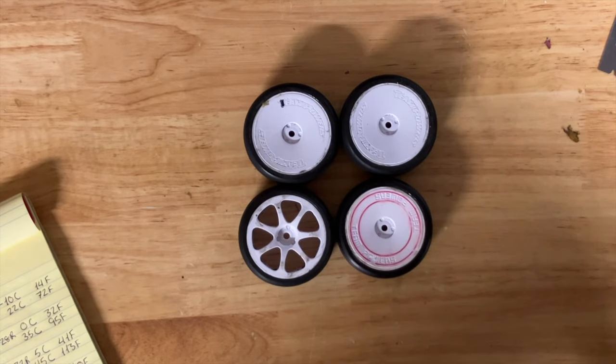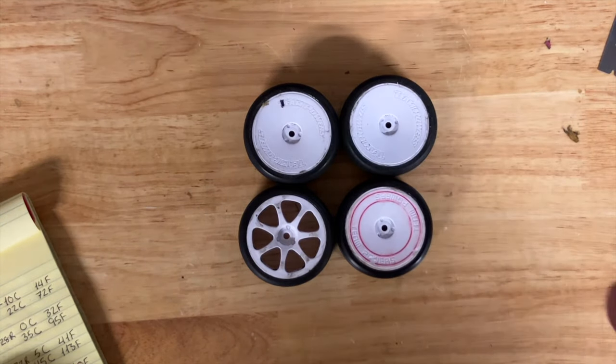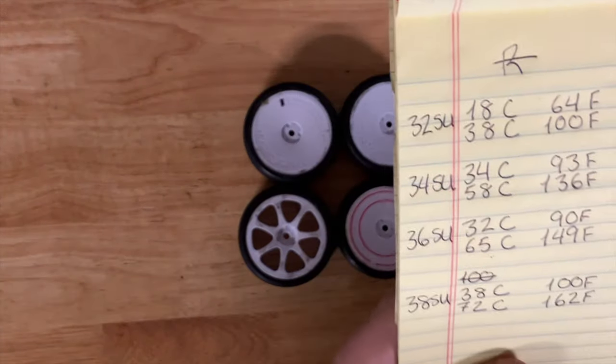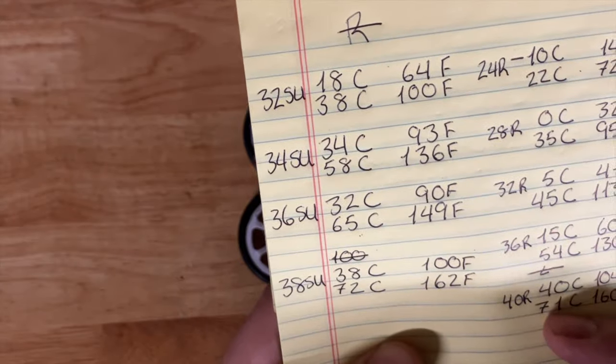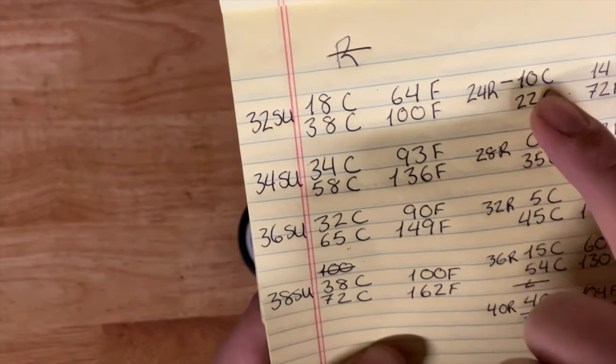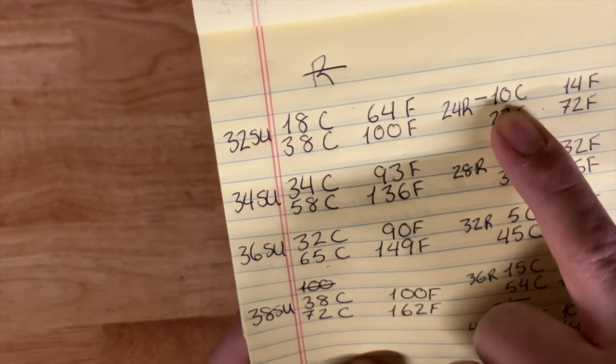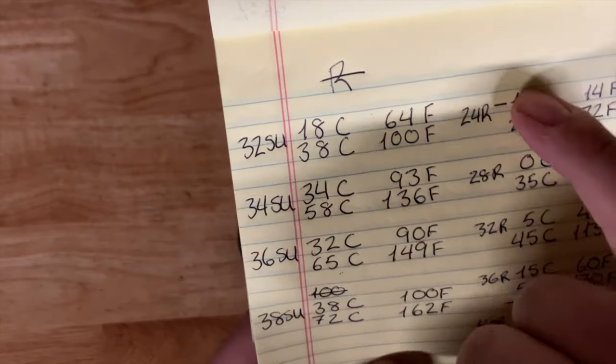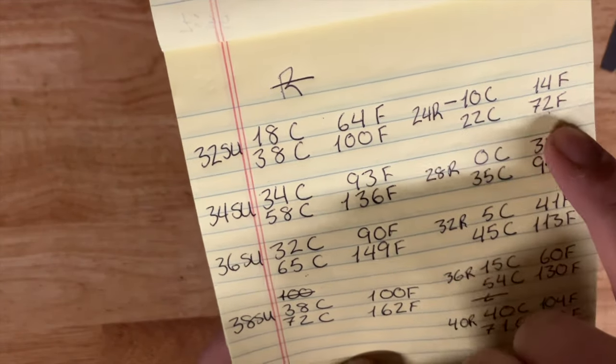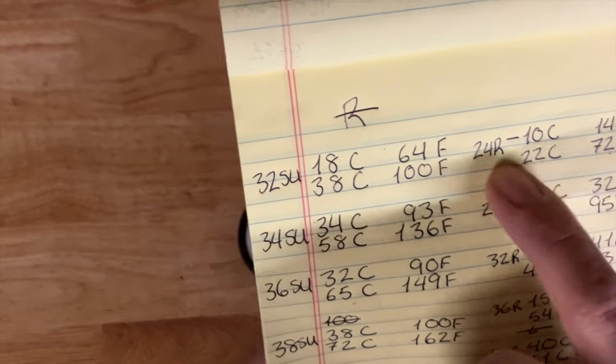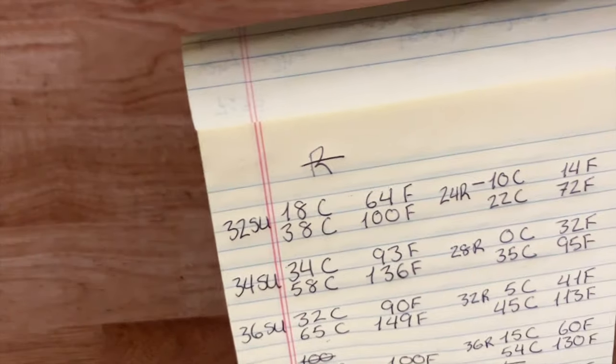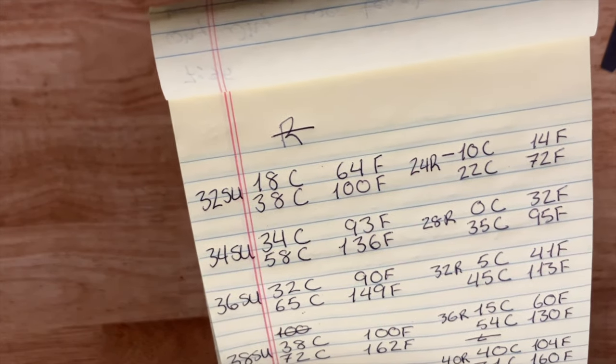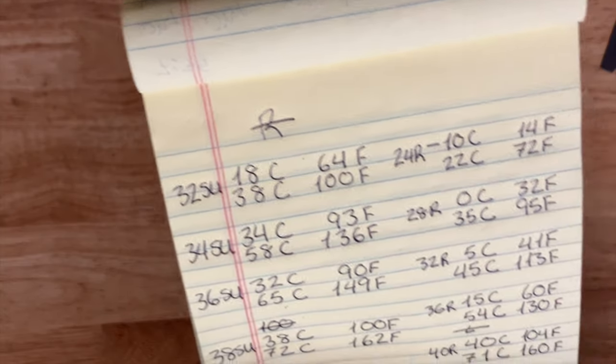Now tires, there is no industry standard that I'm aware of as far as numbering, so everything varies like you wouldn't believe. For example, if we went into the R, the 24R low-end temperature we're looking at -10C to 14F, all the way up to 22C or 72F. So these would be your cold weather tire compound, probably much softer. If you were to run these in hot weather, you're probably going to destroy them.